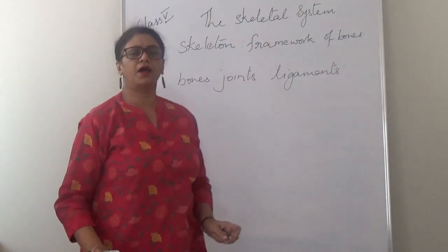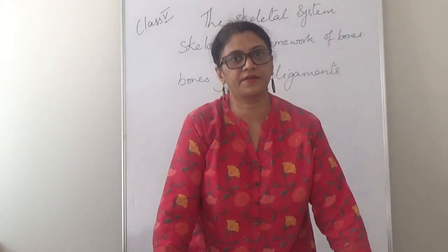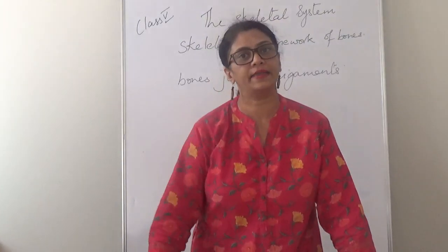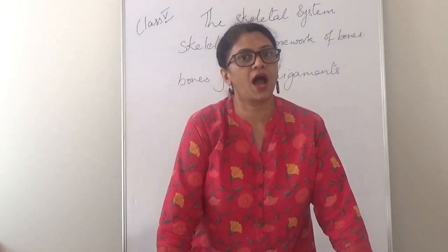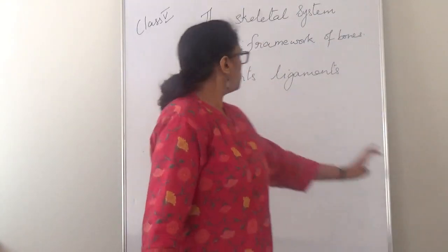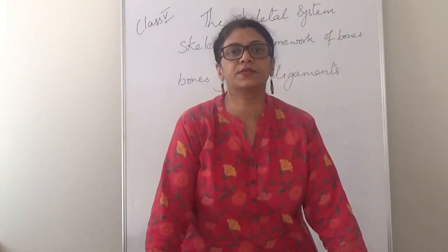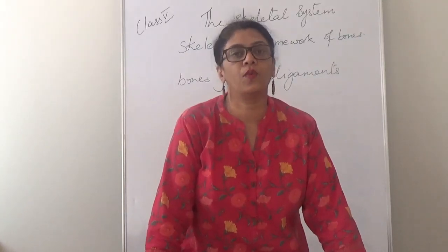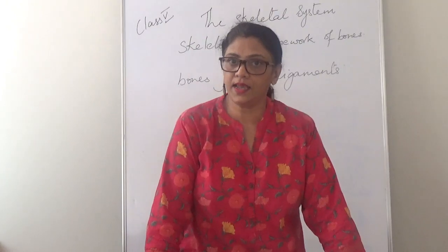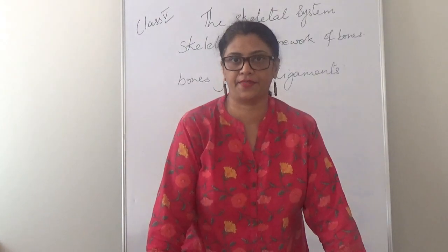What are bones? When you touch your knee in the front you can feel something hard, and when you touch the knee behind you feel something soft. The hard part is the bone and the soft part is the muscle. A joint is a place in your body where two or more bones meet. Ligaments are the tissues that hold the bones together.